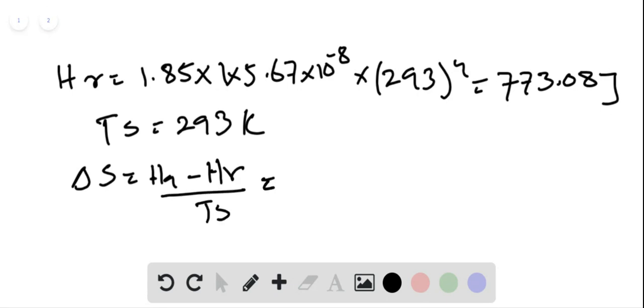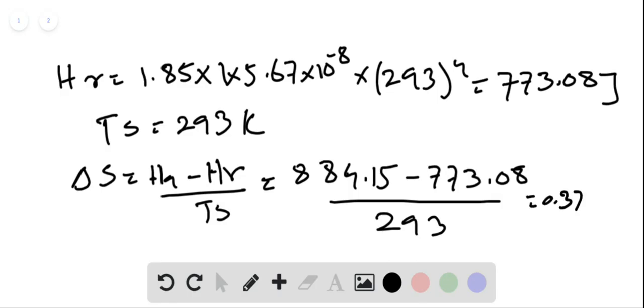Substituting the values for HA and HR we calculated previously: 884.15 minus 773.08 divided by 293. This gives us a change in entropy of 0.379 joules per Kelvin.